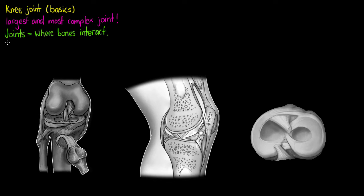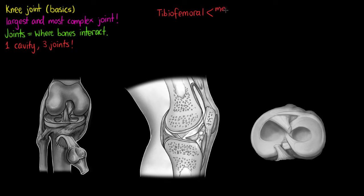The knee is the most complex joint in the body because it consists of only one joint cavity, however within that space there are actually three joints — an exception to our usual rule when we originally described synovial joints. The joints are between the tibia and the distal end of the femur, known together as the tibiofemoral joints, and are located medially and laterally above the meniscus of the tibia but below the femoral condyles.